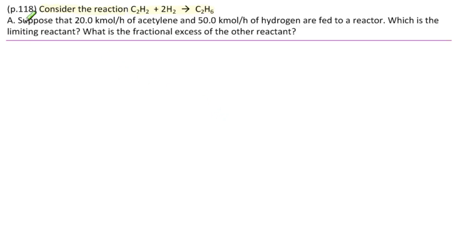Under part A, we have: suppose that 20 kilomole per hour of acetylene and 50 kilomole per hour of hydrogen are fed to a reactor. The questions are, which is the limiting reactant and what is the fractional excess of the other reactant?